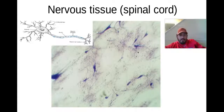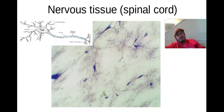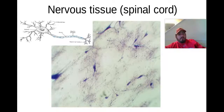You can see the neuroglia — the dots in here, the supporting cells. And you can see some of these long neurons, those long axons. This is where the dendrites would be over here by the cell body. Same thing: long axon, cell body, dendrites.